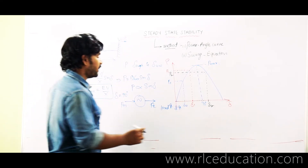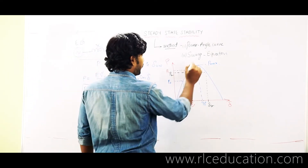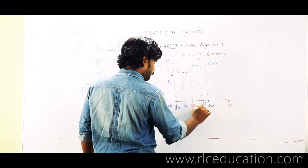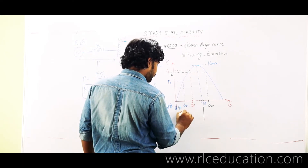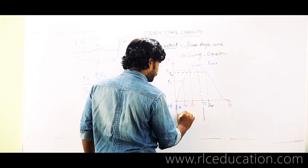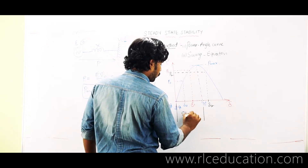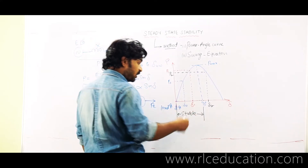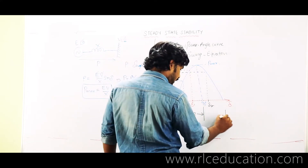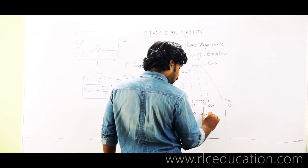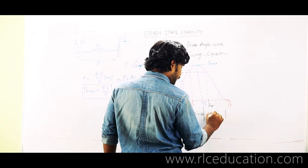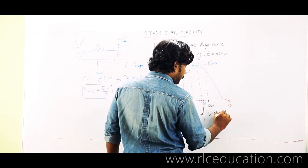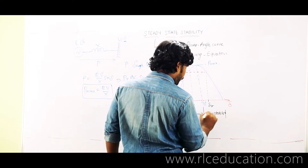So the region up to delta equal to 90 degrees is called the stable zone of operation. In the power angle curve, this region up to 90 degrees is called the stable operating zone, and if the load is increased so much that delta goes beyond 90 degrees, this is called the unstable operating zone.